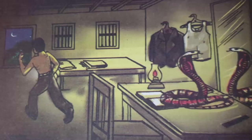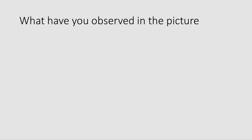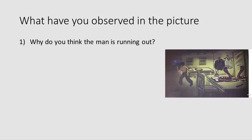Now, after observing this picture, we will try to answer some questions. What have you observed in the picture? Why do you think the man is running out? It is very clear — as there is a snake on the table, the man cannot remain in the room with a snake. So he is running out of the room in fear of the snake.